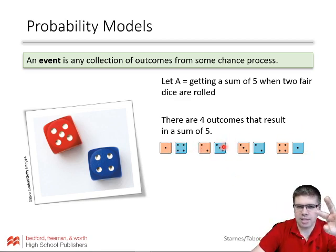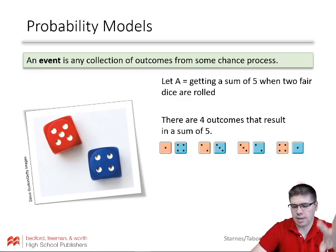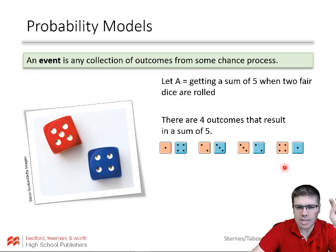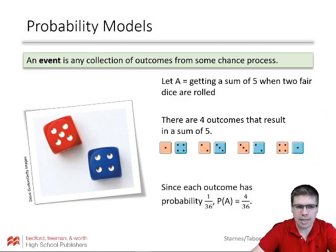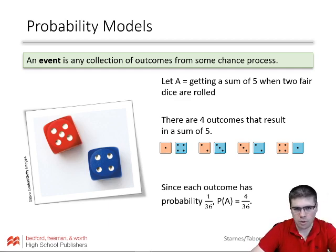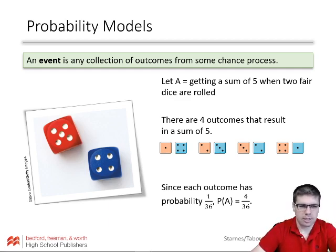If you have a two and a two, there's not a separate outcome for another two and a two — that's just one of the 36 outcomes. So here we have four unique outcomes out of those 36 possible outcomes. Since they're equally likely, we get a probability of four out of 36. Each outcome had a one-thirty-sixth probability, so we add those up, giving us four out of 36, which we could reduce.